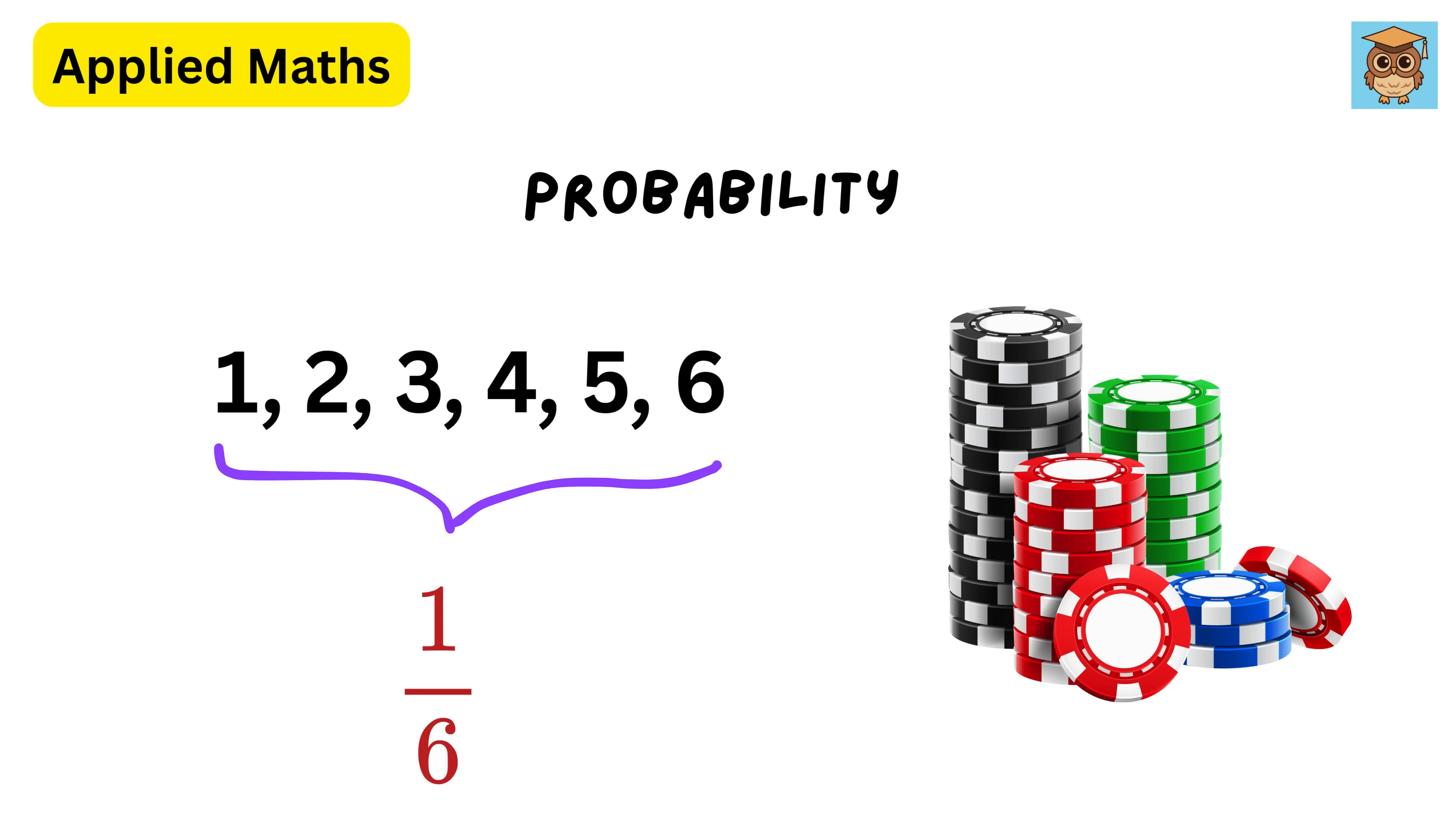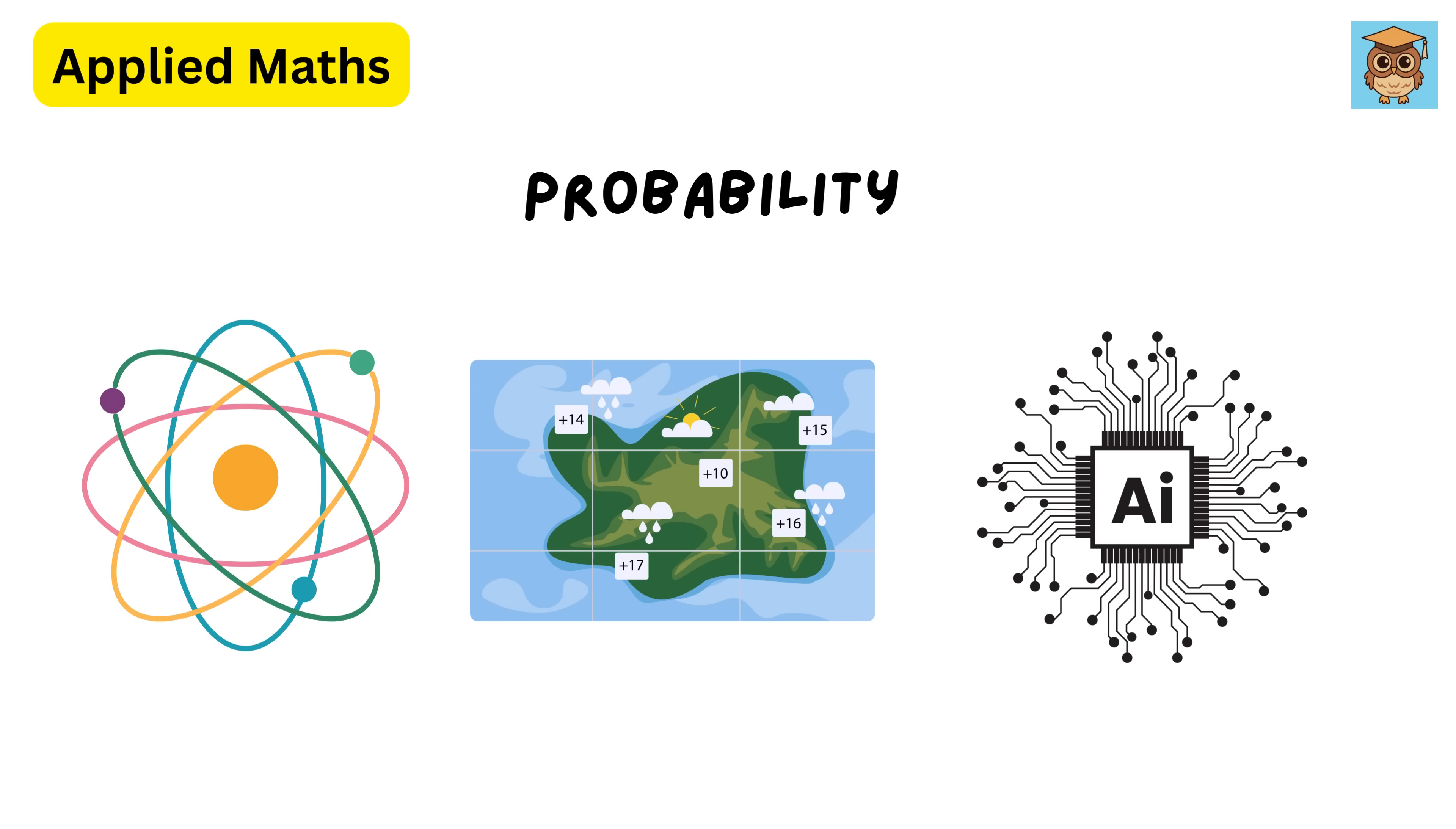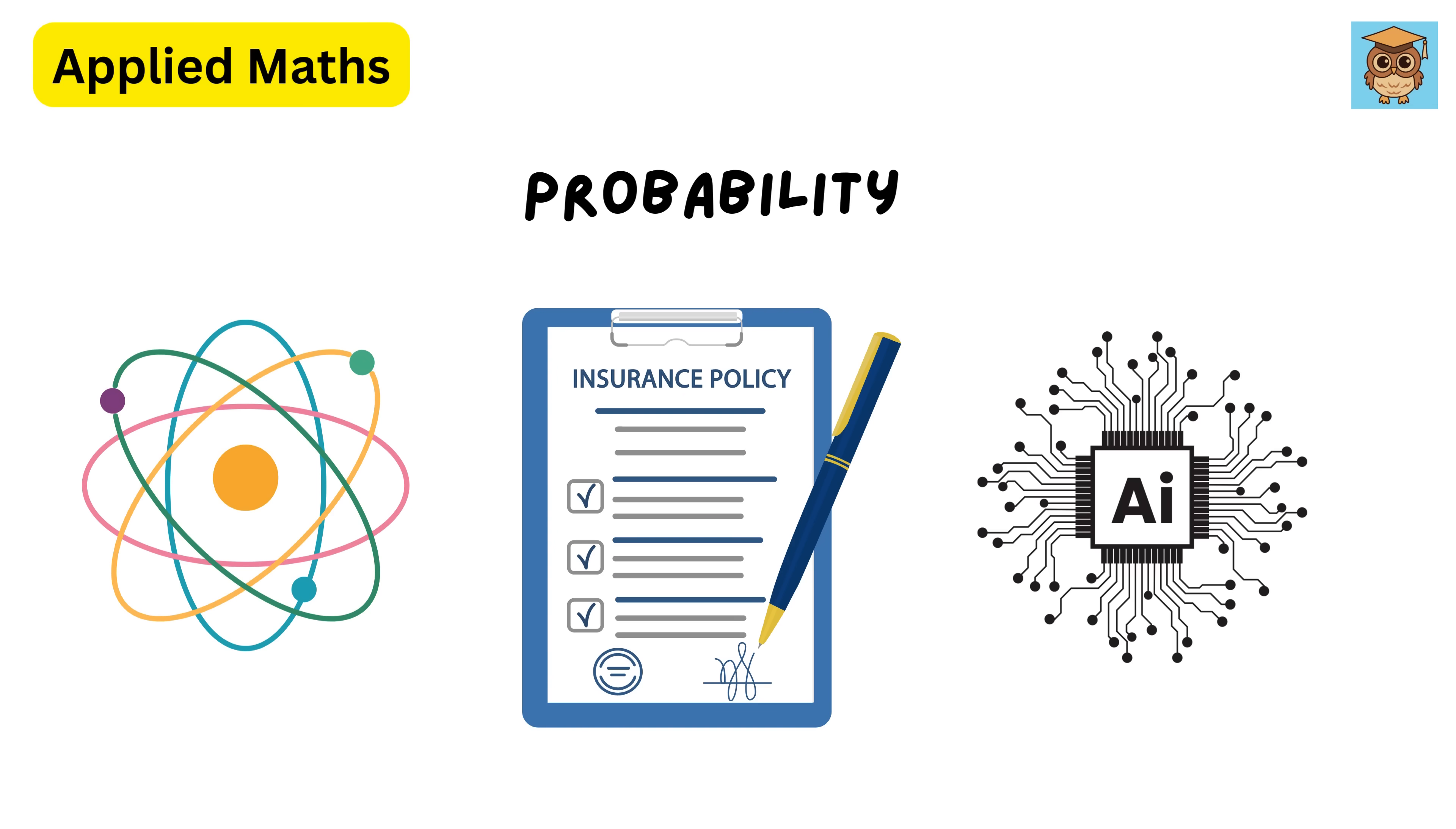It's used in gambling, weather forecasting, quantum mechanics, AI, or machine learning to be specific, in order to predict outcomes from data, and even in insurance calculations. Every time you take a risk, probability is at play.